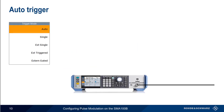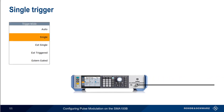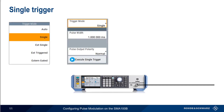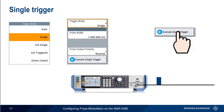Auto Mode repeats the defined pulses continuously without needing any user intervention or external input. In Single Mode, the single or double pulse will be transmitted each time the Execute Single Trigger button is pressed. Remember in Single Mode, only a single pulse or a pulse pair is transmitted with each trigger press.